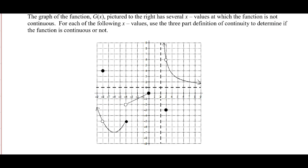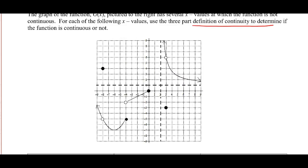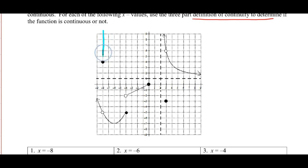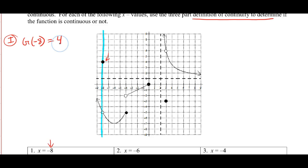On the next page we're looking at specific examples, scaffolding with a graph and practicing applying the three parts of the limit-based continuity definition. Our first one asks about continuity at x = −8. Part one asks: is g(−8) defined? Looking at x = −8, yes, it's defined right there and it equals 4. So the function is defined.